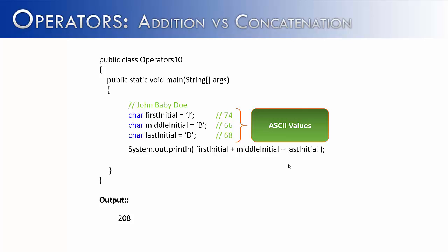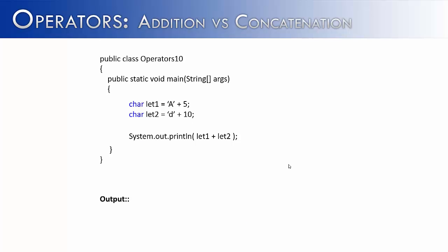And so what we get are 74, 66, and 68. And if you add those three values together, you get 208. So hopefully you see the problem I'm trying to address here. In an output statement, when is it going to concatenate, and when is it going to add? When you have a primitive like a character, it is going to add.